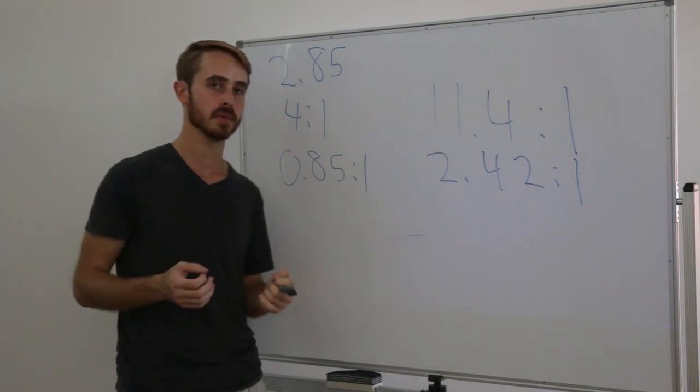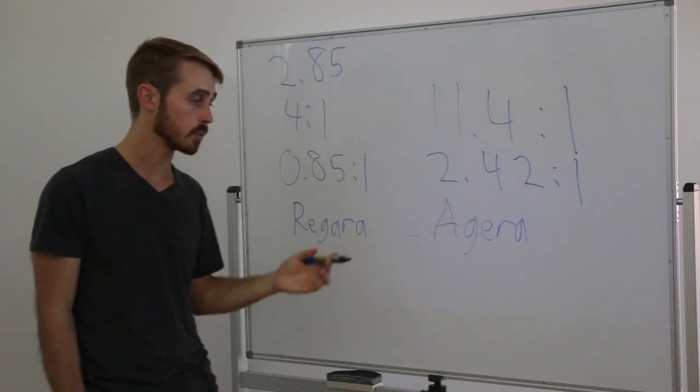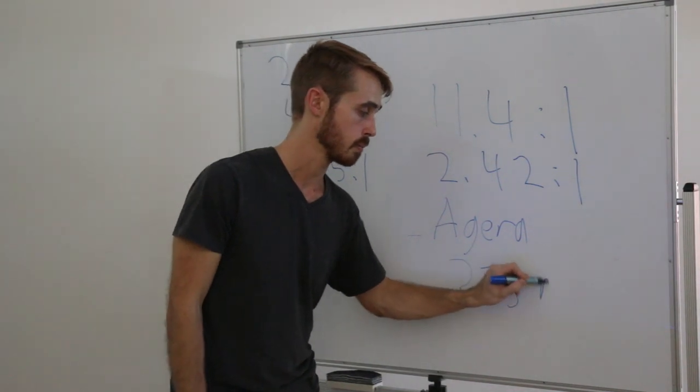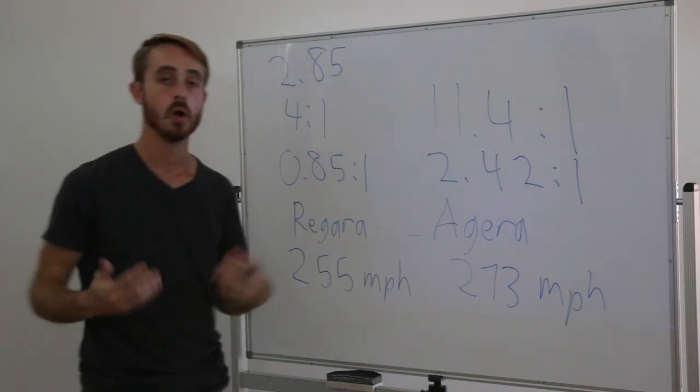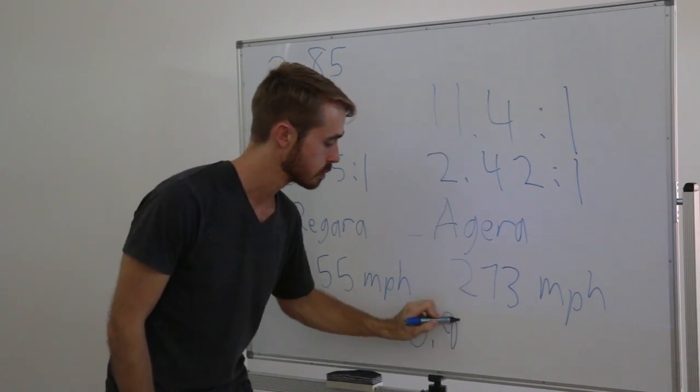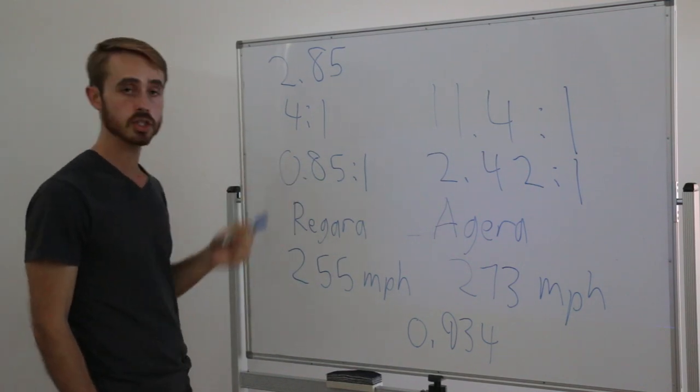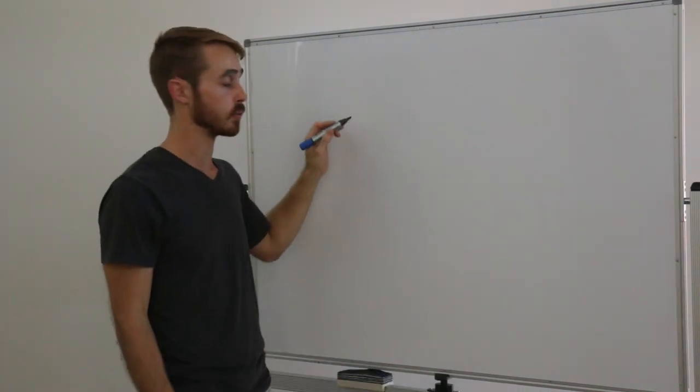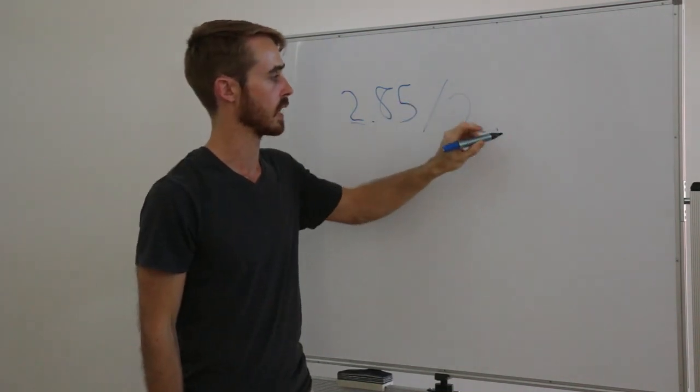But, let us consider for a moment the fact that the Regera has a lower top speed than the Agera R. The Agera R top speed is 273 miles per hour. Whereas the Regera top speed is only around 250, what does this give us as our speed ratio? 0.934 between the two speeds. So, we can see that we need a larger number here, which is more convenient as it is close to 1 to 1 for our torque converter.